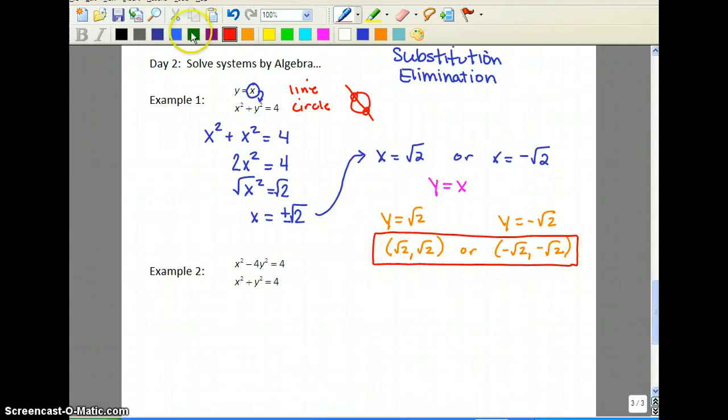Alright, in example number 2, you can use elimination because you have x squareds and y squareds in both equations. So you can do this with elimination. Well, I'm going to eliminate the y's. So let's multiply the bottom one by 4.